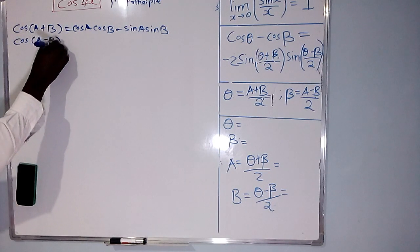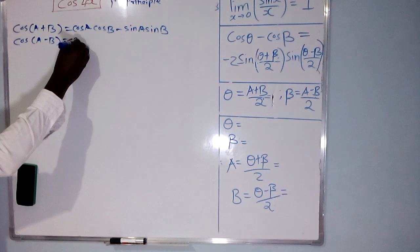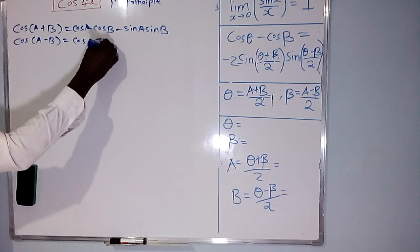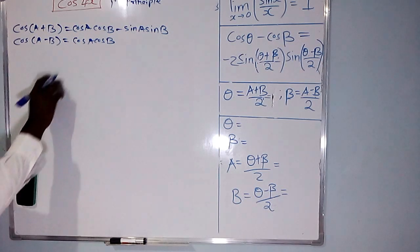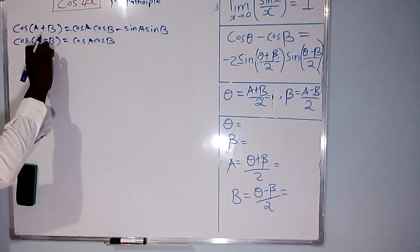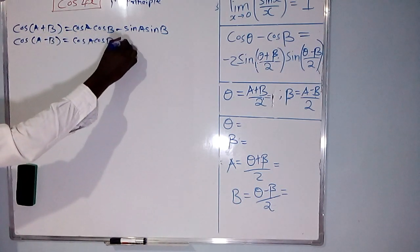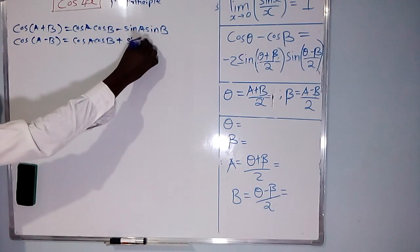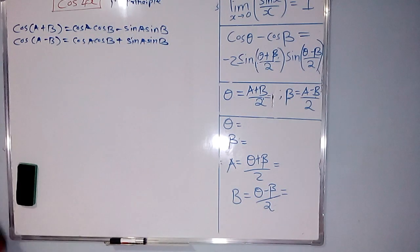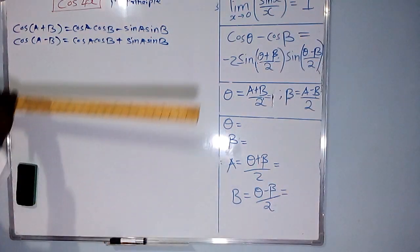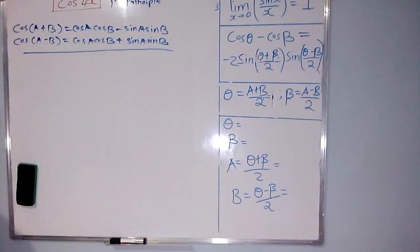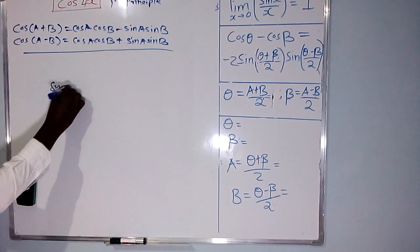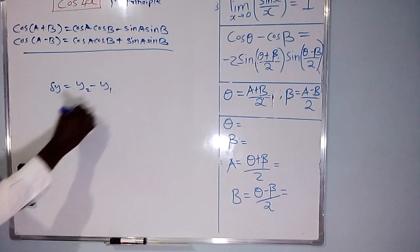What is cos(A-B)? It is cos A cos B plus sin A sin B. Then you recall from first principles that change in y is y2 minus y1, and if you want to go for x1, y1 and x1, change in y will be y2 minus y1 and change in x will be x2 minus x1.